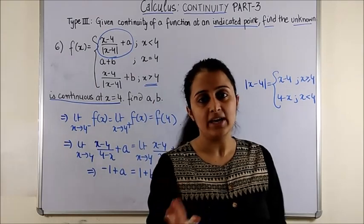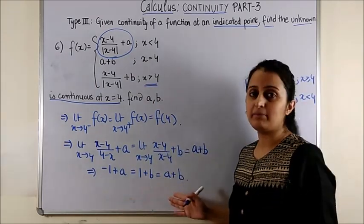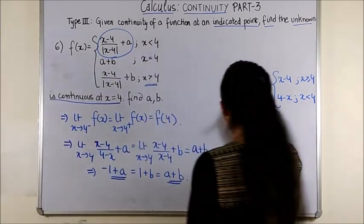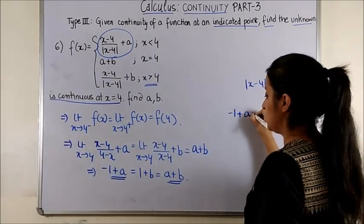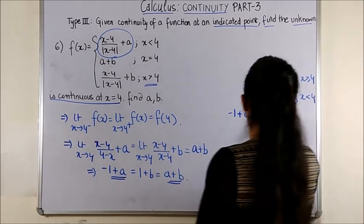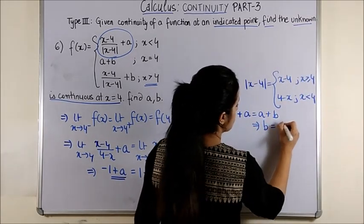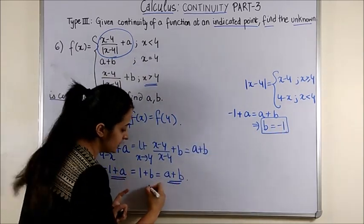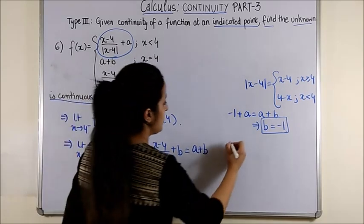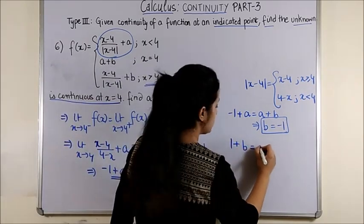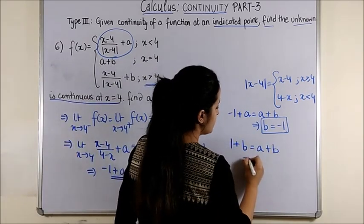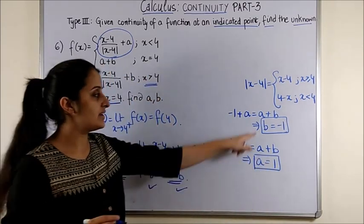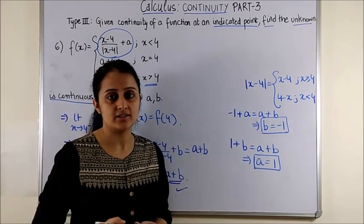Now solve this the way you like, you have to get your a and b. If I equate the first and third you get minus 1 plus a is equal to a plus b which gives us b is minus 1. Likewise if I equate second and third we get 1 plus b is equal to a plus b which gives us a is 1. So a is 1 and b is minus 1 are the answers.